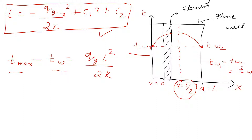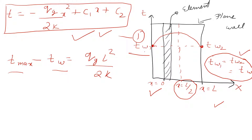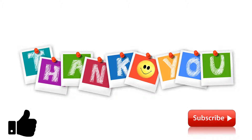Many cases can be formed: both surfaces at the same temperature, or one surface insulated. We can directly put values into the derived equation to get the answer for specific problems. There is also the case where both surfaces have different temperatures T_w1 and T_w2. By putting appropriate boundary conditions into the general equation, we can find the required answers. Thank you for watching - the next video will be based on problems on conduction.